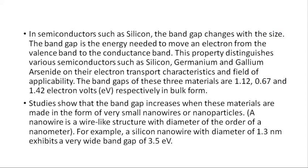Similarly, in semiconductors — for example silicon — the band gap changes with size. The band gap energy is the difference between the energy of the valence band and the conduction band. In bulk form, silicon, germanium, and gallium arsenide have band gaps of 1.12, 0.67, and 1.42 electron volts respectively. But in nanoparticles, this band gap increases — as size goes down, band gap energy increases. For example, a silicon nanowire with a diameter of 1.3 nm exhibits a wide band gap of 3.5 electron volts.